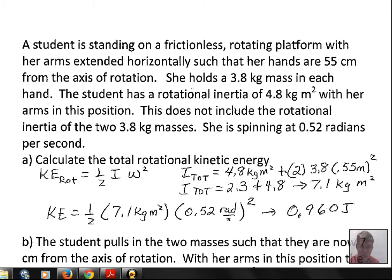Additionally, there's going to be rotational inertia due to each of the 3.8 kilogram masses. Someone has started this person spinning or the person pushed off from a fixed anchor. The spin is 0.52 radians per second.